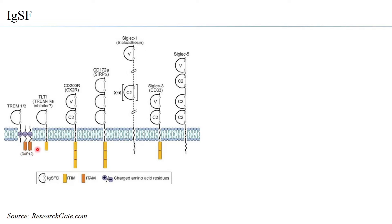For example, there is what is called the immunoreceptor tyrosine-based activation motif — ITAM. Similarly, there are ITIMs. These bind to ligands on the surface, which can change the conformation of the cytoplasmic domain and based on that induce signal transduction.